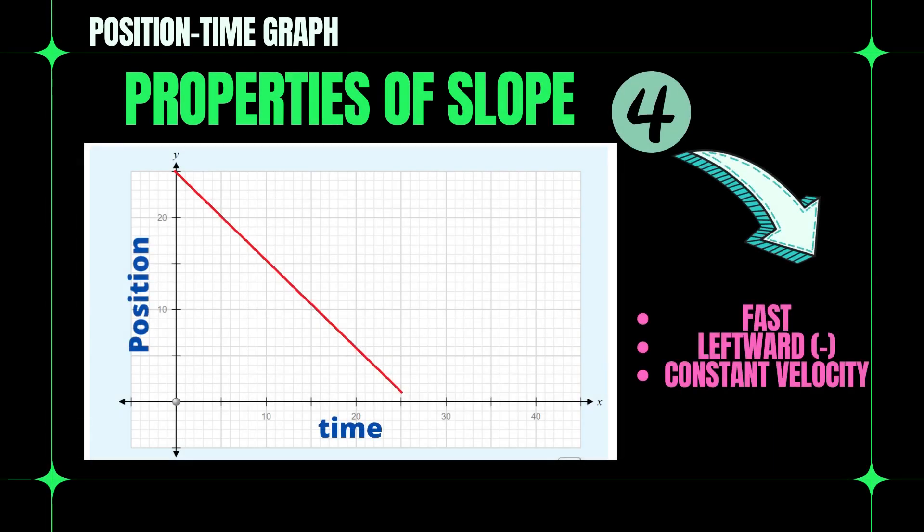Lastly, this type of graph shows fast, leftward, that is negative, and it has constant velocity.